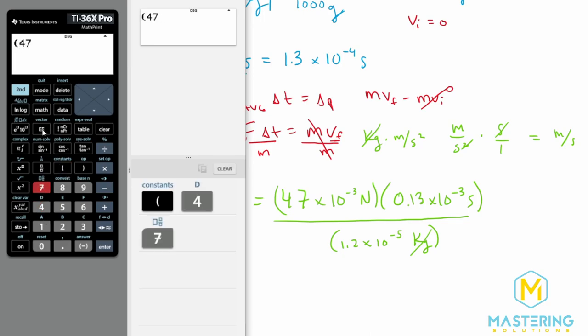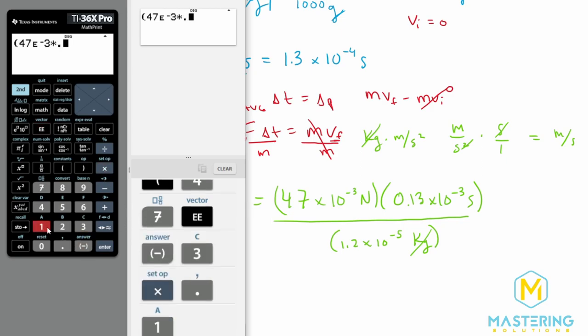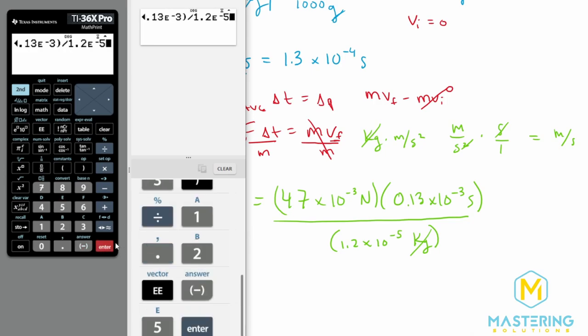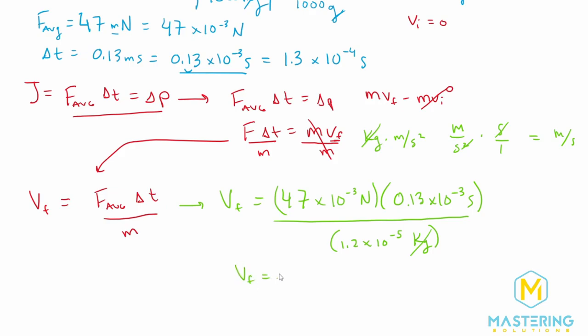47 times 10 to the negative 3 times 0.13 times 10 to the negative 3 all divided by 1.2 times 10 to the negative 5 leaves us with 0.509. The velocity final is equal to 0.509 meters per second. And rounded gives us 0.51 meters per second.